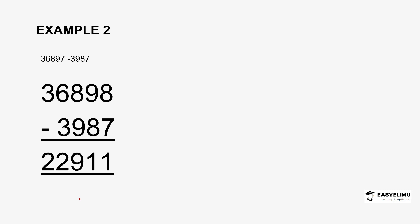The second and final example: 36,897 minus 3,987. The first step is rearrangement so digits are arranged vertically according to place values. 7 is in the 1's place value with 7 in the second number; 9 with 8; 8 with 9; 6 with 3; and there is nothing in the second number for the 10,000's place — you can fill the gap using 0. Then start the subtraction process digit by digit, from the 1's place value moving left through 10's, 100's, 1000's, and 10,000's.